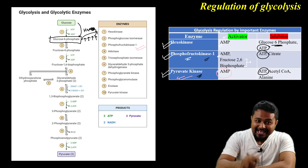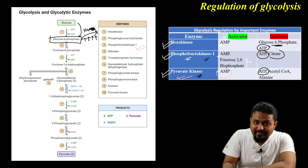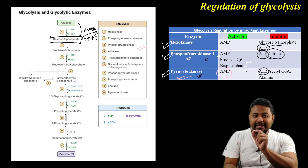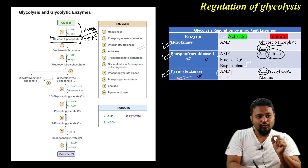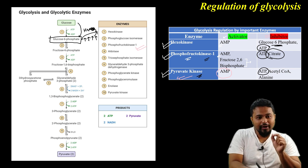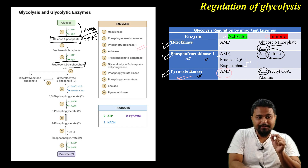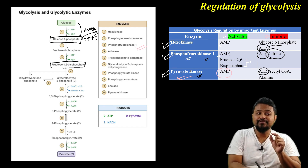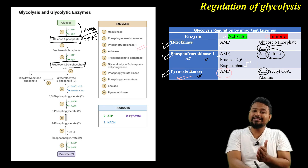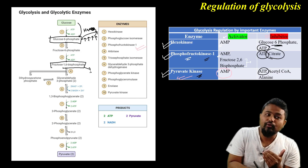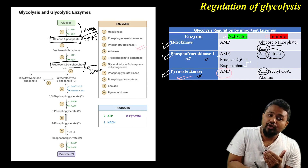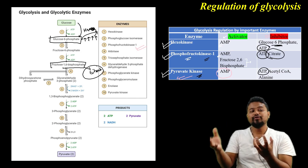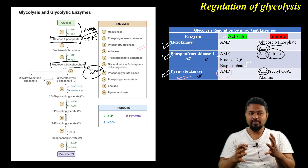The next one is citrate. Citrate relates to phosphofructokinase — when fructose-1,6-bisphosphate product goes on to produce citrate in the downstream pathway, citrate can come back and inhibit this reaction as a feedback inhibitor.